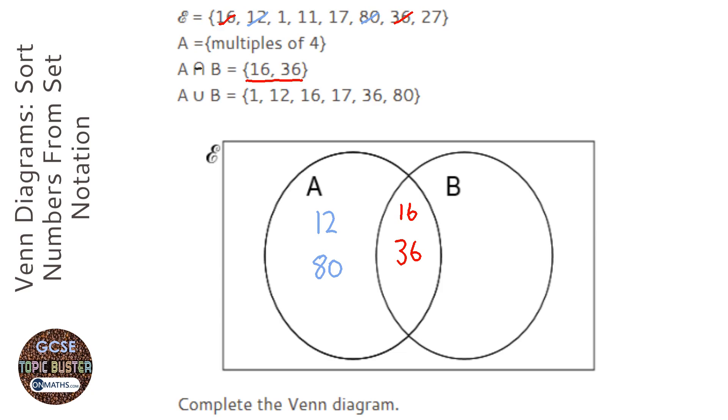Now looking down our list at the bottom, we've got a list of values that are in A or B. That just means it could be in A, it could be in B, it could be in both. We've already crossed out some of these because we've already used them - 16 and 36 - and it leaves us with 1 and 17. They've got to go somewhere, so they can go over here.